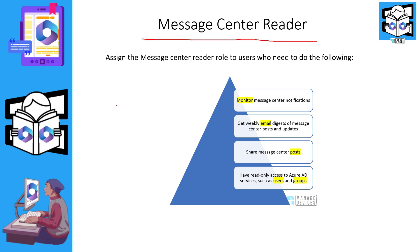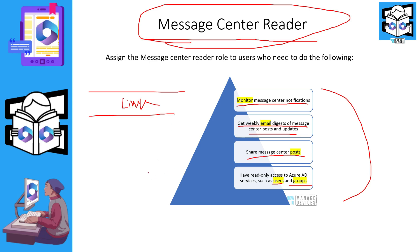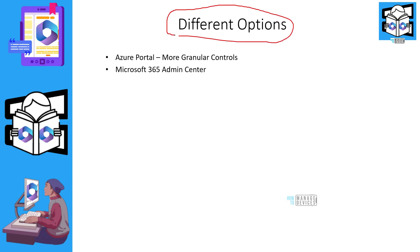Now let's look into message center reader. For example, if you get a mail alert from Microsoft stating that Intune is down or Teams is not working due to a service issue, that email will contain a link. To access that link you need message center reader permission. Permissions include: monitoring message center notifications, getting weekly email digests, sharing message center posts, and read-only access to users and groups.